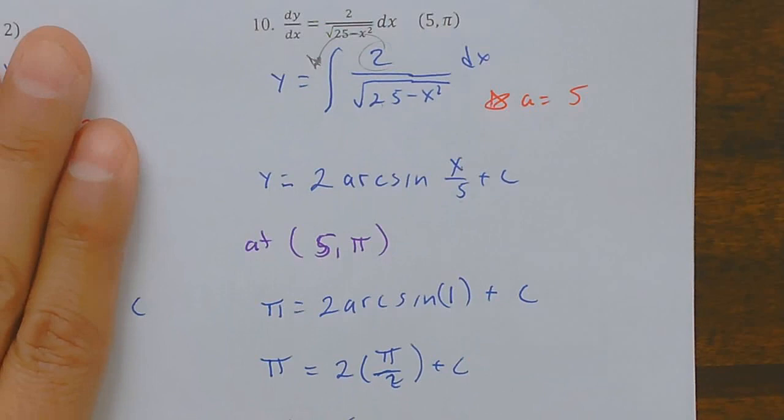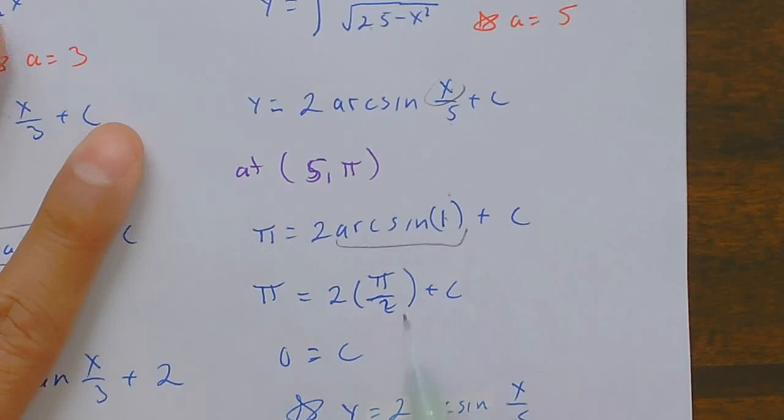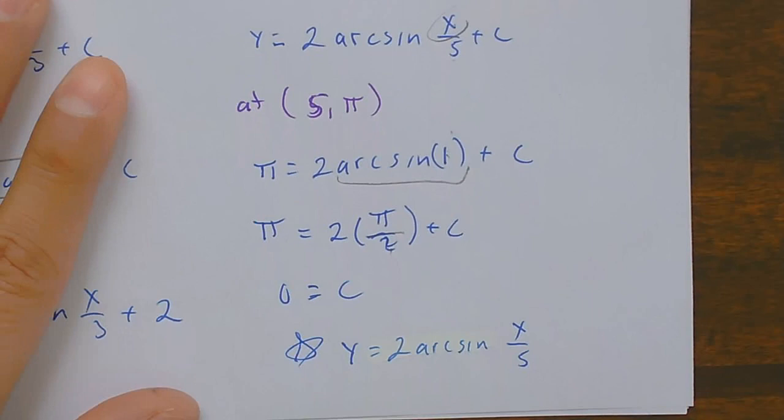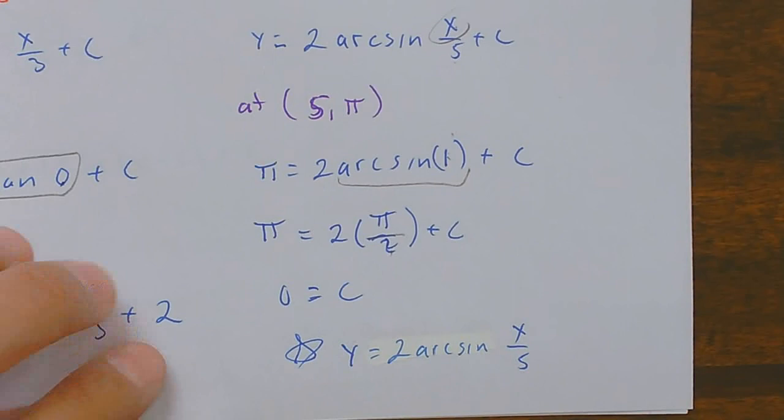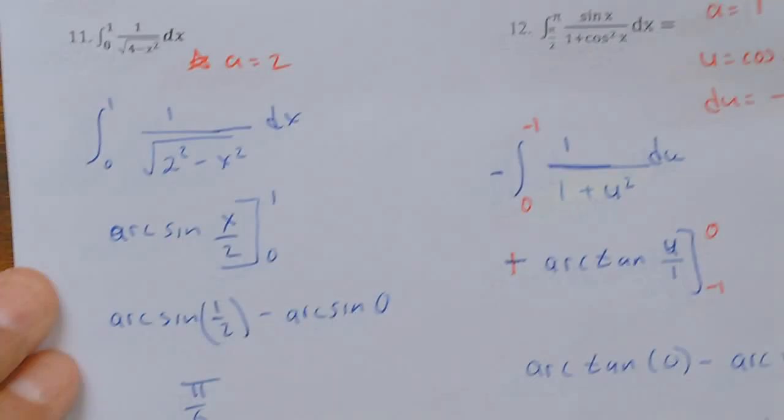Number eleven is a definite integral. Looking at it, this is another arc tangent form with a equals 2. I rewrote it so you can see the a value being squared, giving arc tan of u over 8, evaluated from 0 to 1 using the Fundamental Theorem — top minus bottom: arc sine of one half minus arc sine of 0.